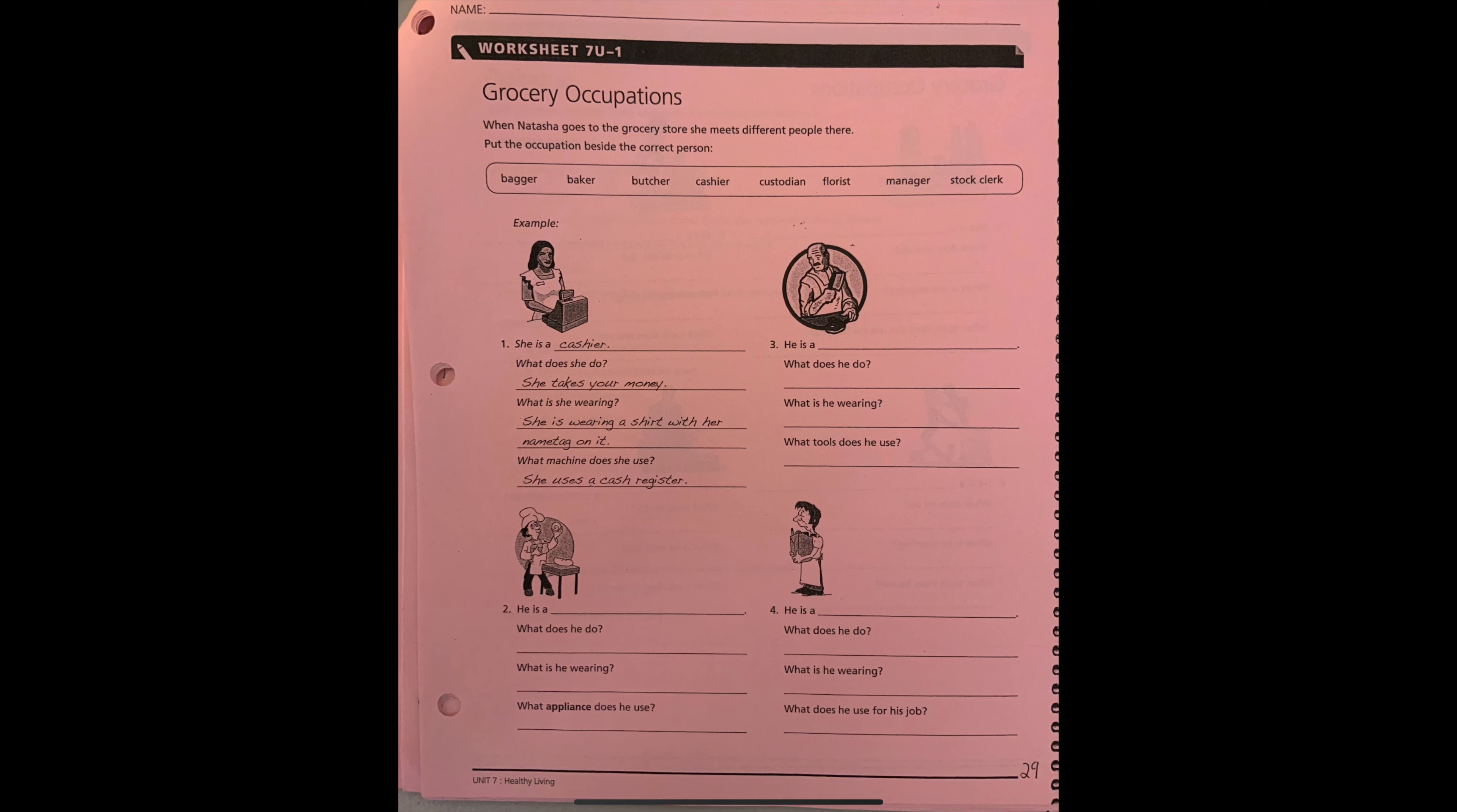What is she wearing? She is wearing a shirt with her name tag on it. What machine does she use? She uses a cash register. So you can say she uses a cash register everyday, because this sentence is what she does for her job everyday.